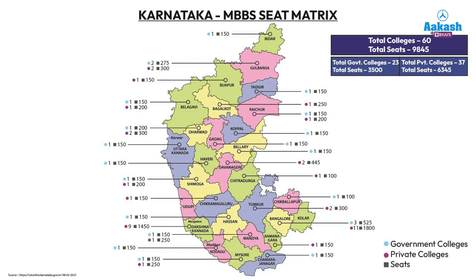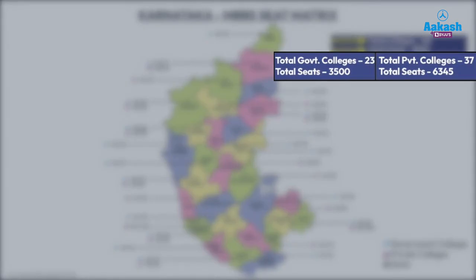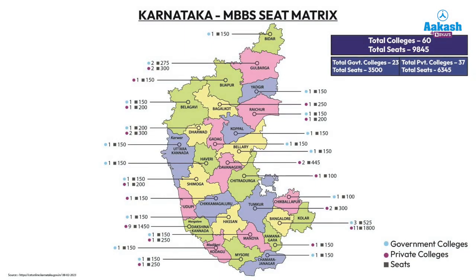Now let's understand the Karnataka state MBBS seat matrix — how many colleges and seats are available. The total number of colleges for MBBS is 60 and total seats are 9,845. Out of these, 23 are government colleges and 37 are private colleges, with 3,500 government seats and 6,345 private seats.